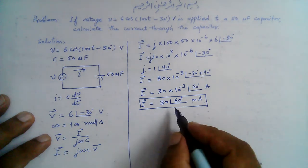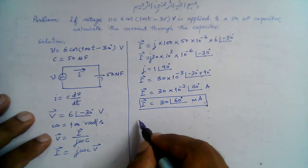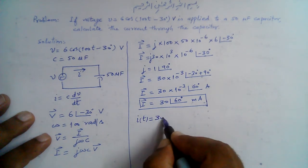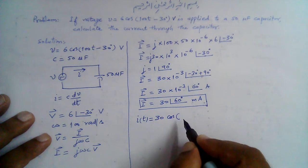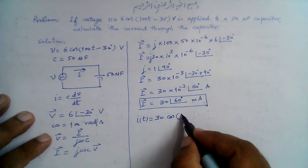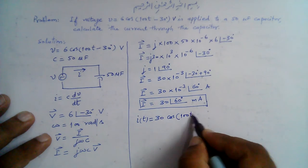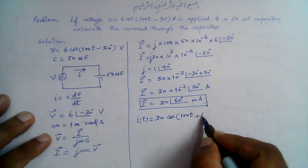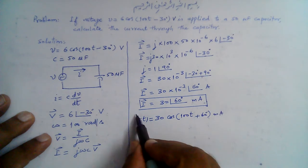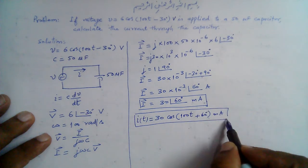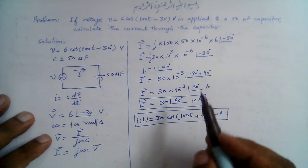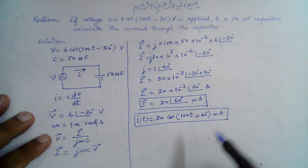The corresponding sinusoidal current is given by i(t) = 30 cos(ωt + 60°). Remember omega was 100, so this is 100T + 60° milliamperes. See that this current leads the voltage by 90 degrees.